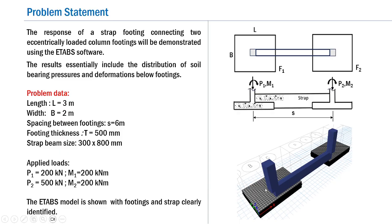Here is the ETABS model, which consists of the two footings sufficiently meshed to provide reliable results. The two footings are connected by the strap beam, which is positioned such that 300 mm of it projects above the footing top surface — in other words, the bottom of the footing and the bottom of the strap are kept at the same level.